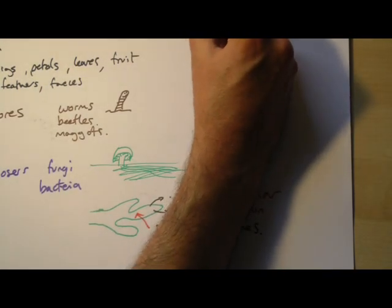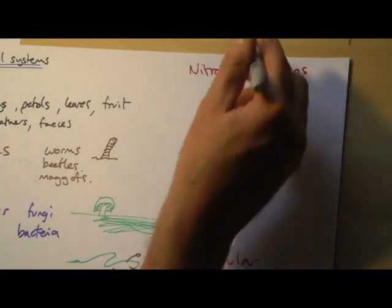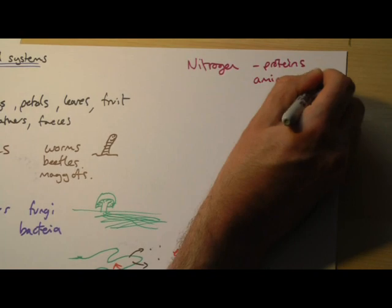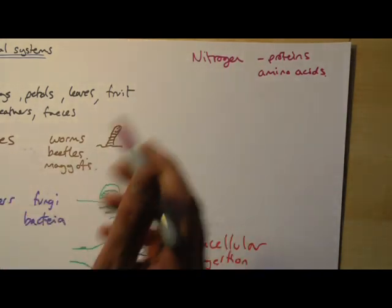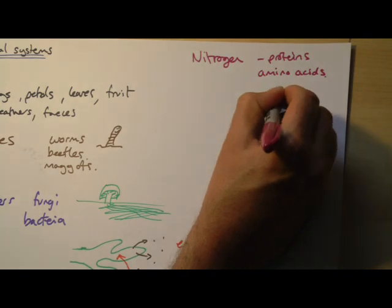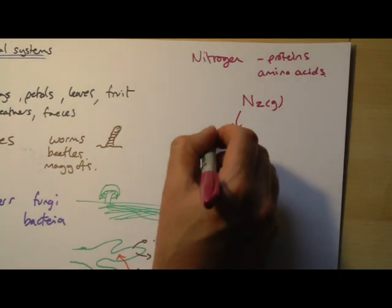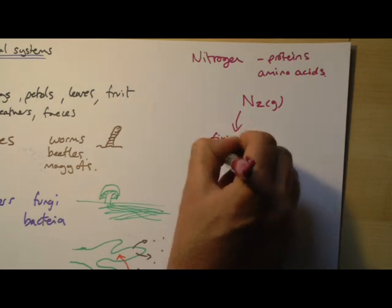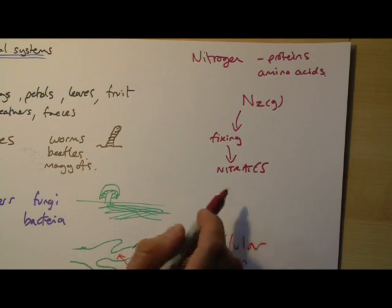And nitrogen is needed to make proteins, amino acids, which of course proteins are made up of. And this is one of the substances that is recycling in the environment. Now there's a couple of ways that the cycle happens, if you remember it from B3, I'm just going to summarise it here. So nitrogen that's in the air, nitrogen gas, can be taken up by bacteria that live in the soil, called nitrogen fixing bacteria. And that makes a substance called nitrates, and nitrates can be absorbed by plants.